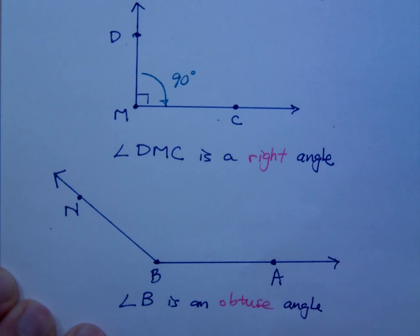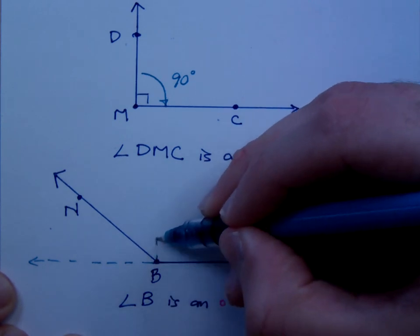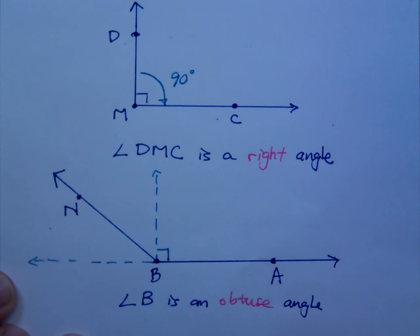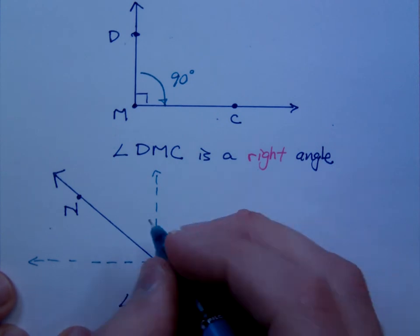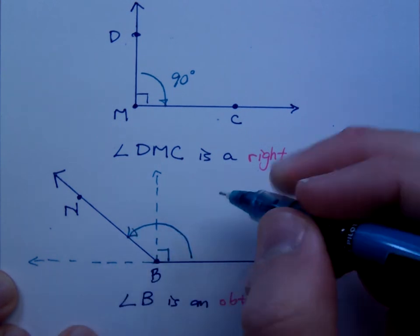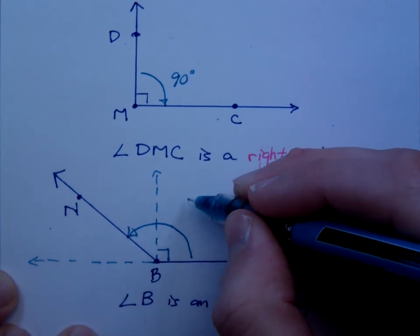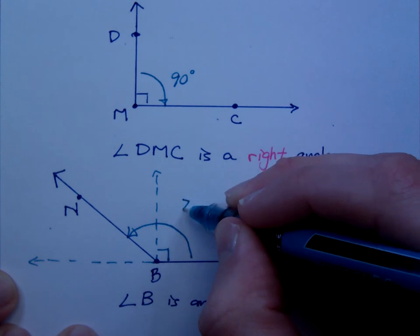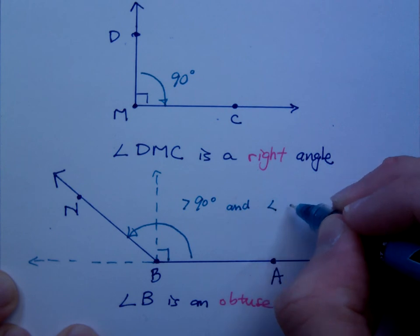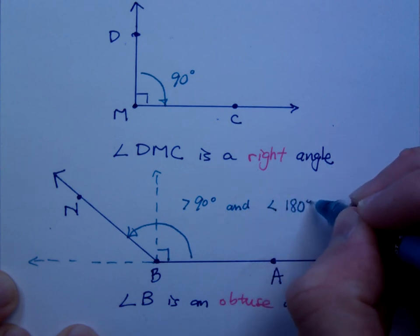And when you look at this, if you were to extend this guy right here, you see that it is more than 90 but it's less than 180. So, this angle measure right here is greater than 90 degrees and it's less than 180 degrees. That's what makes it obtuse.